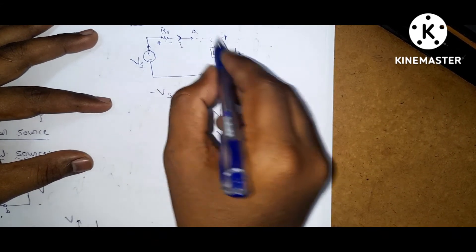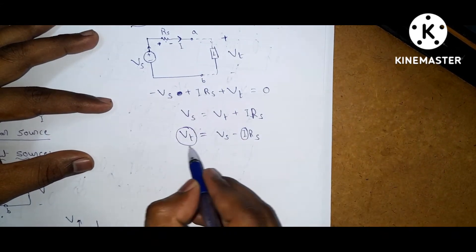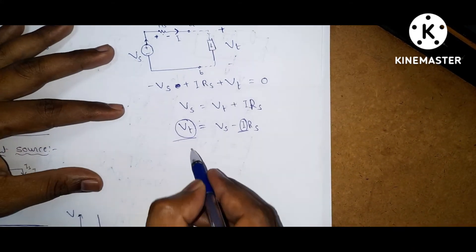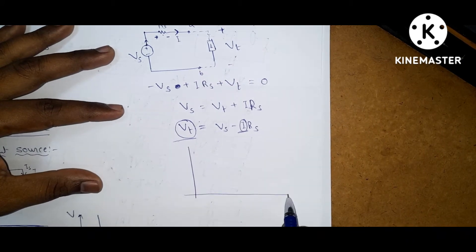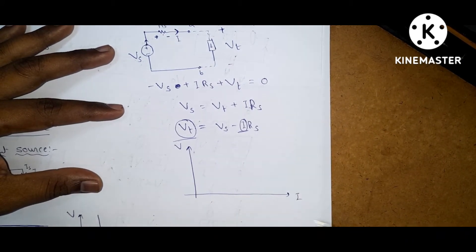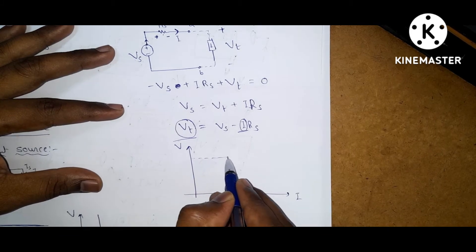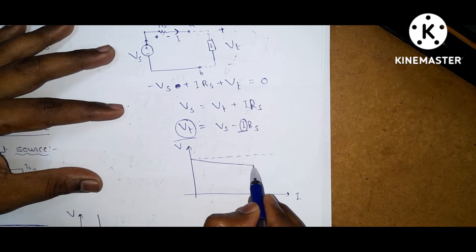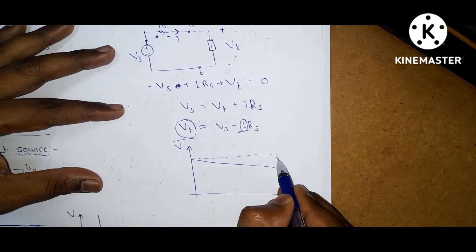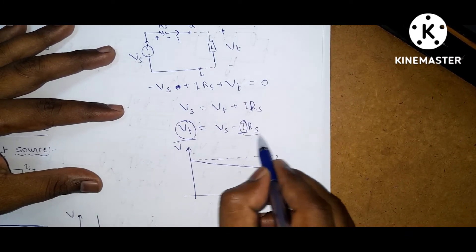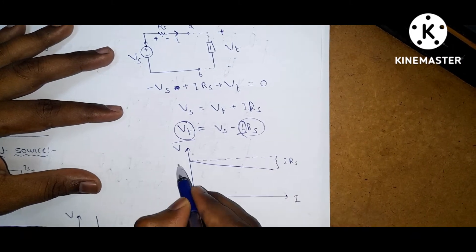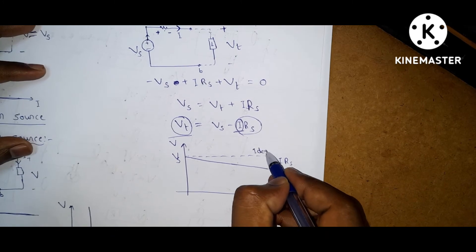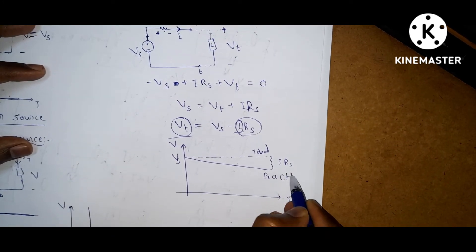The terminal voltage of the practical voltage source depends on the current flowing through the element. On the characteristics graph (V vs I), the ideal voltage source is flat (non-linear), while the practical voltage source shows a droop. This droop is due to the IRS drop, and Vs is the open-circuit voltage.